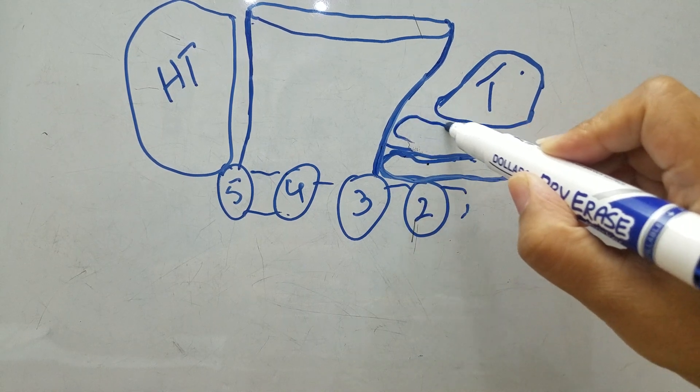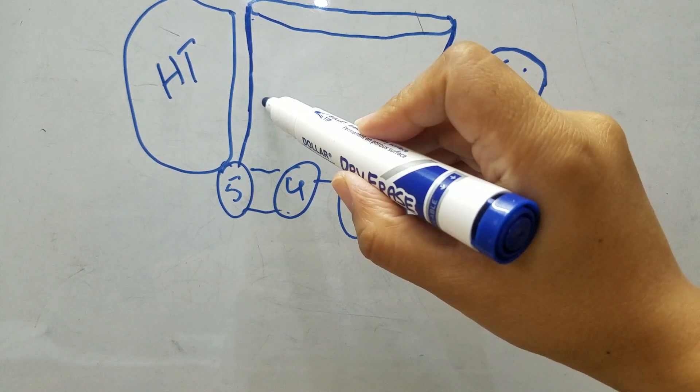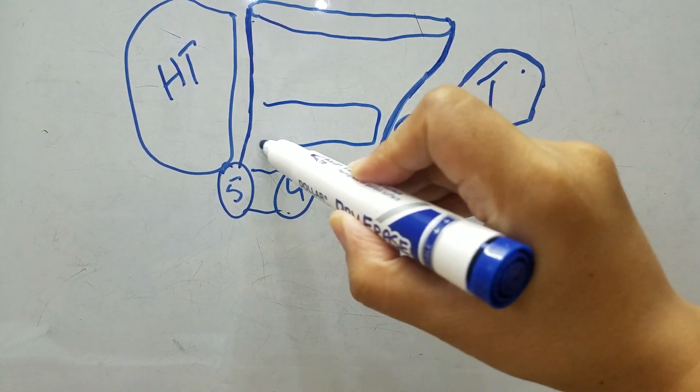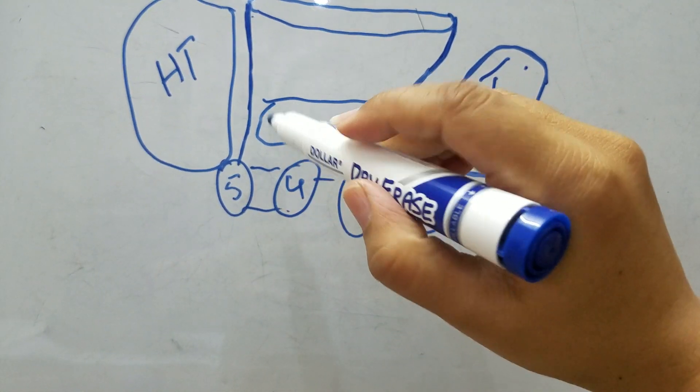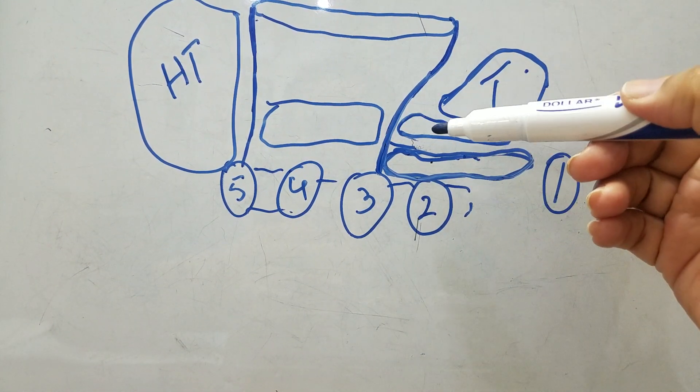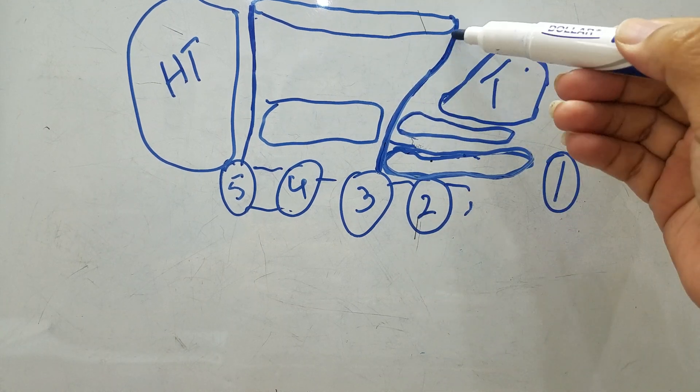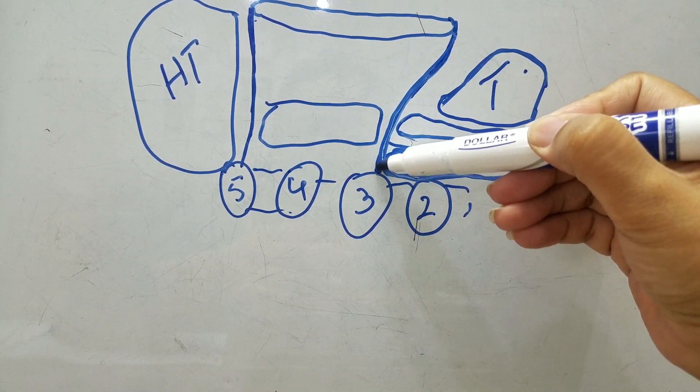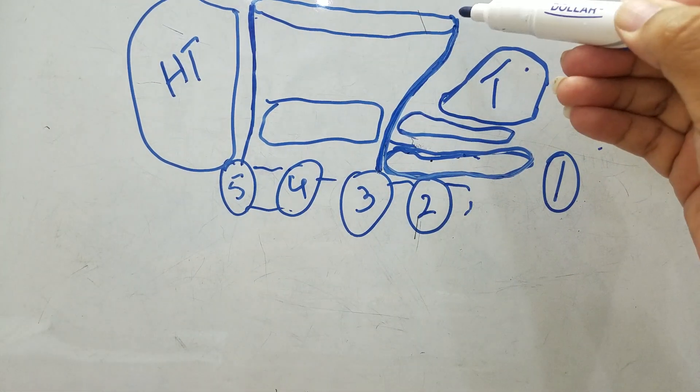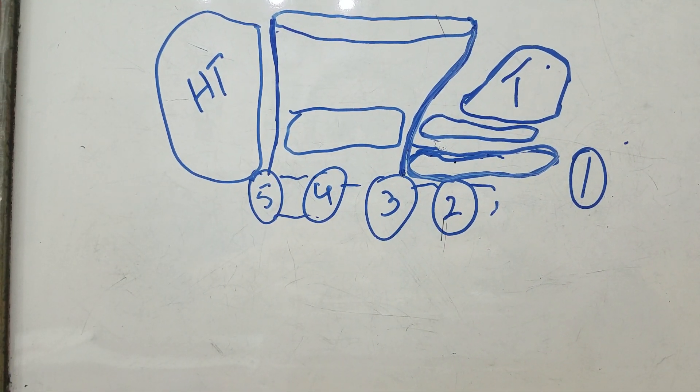So the two palmar spaces, the thenar space and the mid-palmar space, are separated from each other via the lateral septum, which originates from the lateral border of the palmar aponeurosis and is attached to the third metacarpal bone.